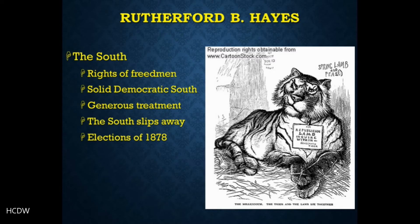Hayes's most troubling issue as president was the South. On one hand he sought to preserve the rights of the freedmen fortified during Reconstruction; on the other hand he hoped to prevent the South from becoming solidly Democratic. It seemed a hopeless task — the South was already on its way to becoming thoroughly Democratic, with only a few states maintaining Republican governments by virtue of Northern troops still in the South. In the end, Hayes decided the best hope for fair treatment of blacks in the South was, in his words, to 'obtain for themselves the blessings of honest and capable local government.' He decided the best way to do this was largely to grant Southern wishes of the federal government, including the removal of Northern troops.